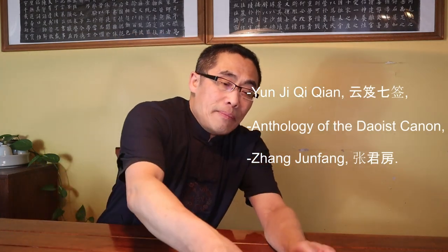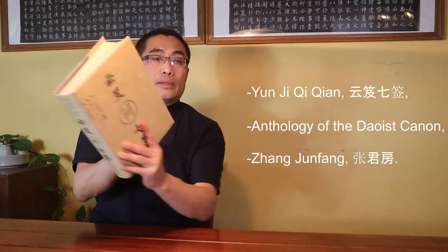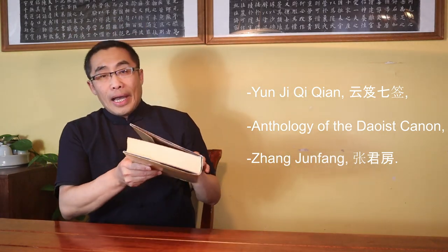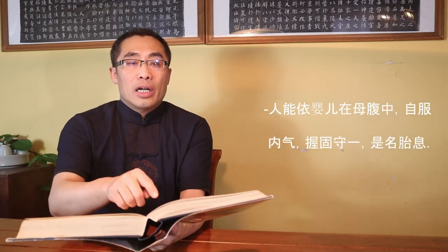In addition to Baopuzi, many other Daoist documents have also mentioned Tai Xi. For example, the Yunji Qichian or Anthology of the Daoist Canon edited by Zhang Junfang around 1000 years ago contains this quote: Ren Neng Yi Ying Er Zai Mu Fu Zhong, Zi Fu Nei Qi, Gu Wo Shu Yi, Shi Ming Tai Xi. End quote.